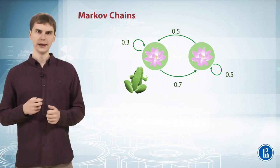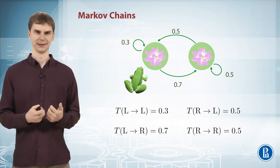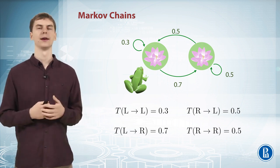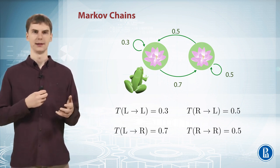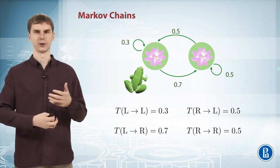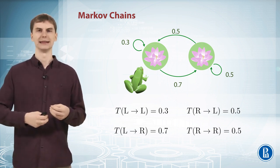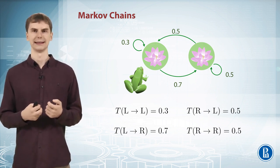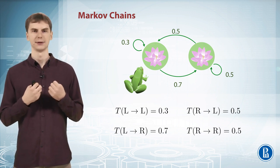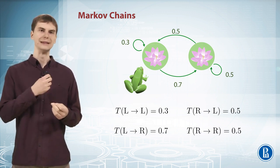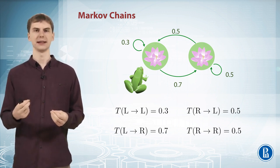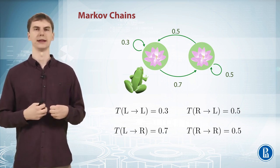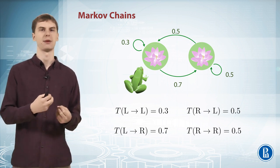We can say that we have a dynamic system which has a state — the state shows us where the frog is now. This dynamic system evolves through time; its state changes. The rules by which the state changes are as follows: the probability to transition from left state to left state is 0.3, and so on. You can define the behavior of your dynamic system using these transition probabilities.